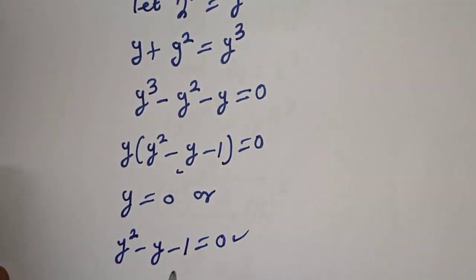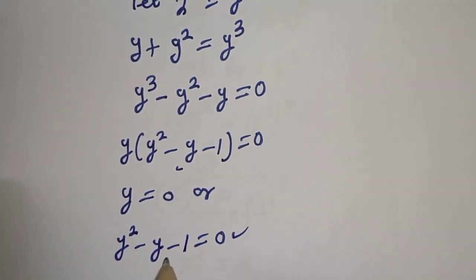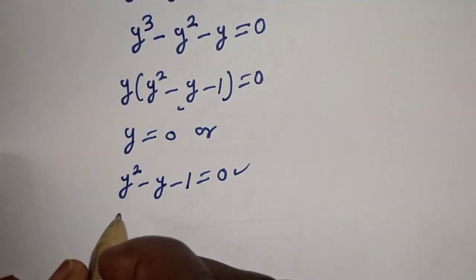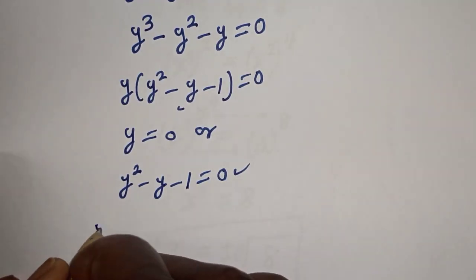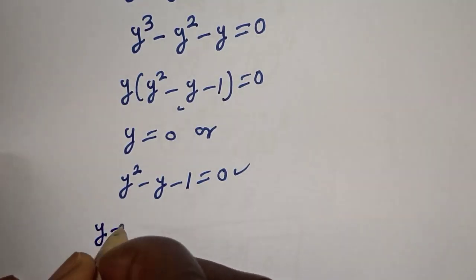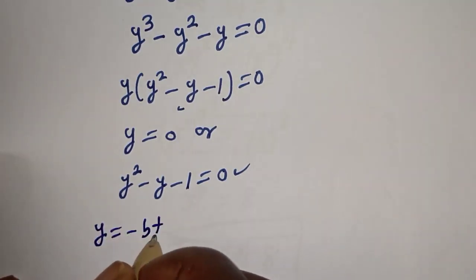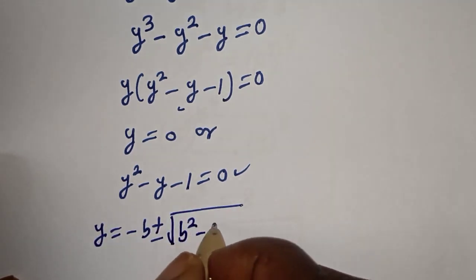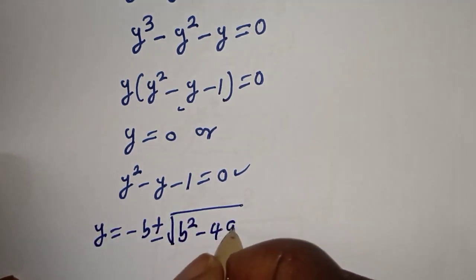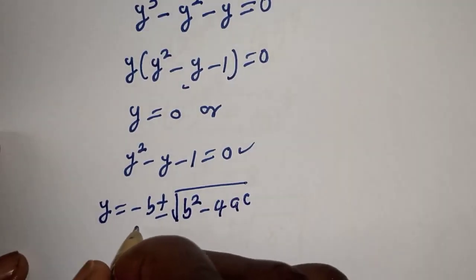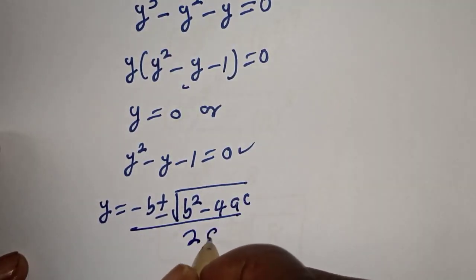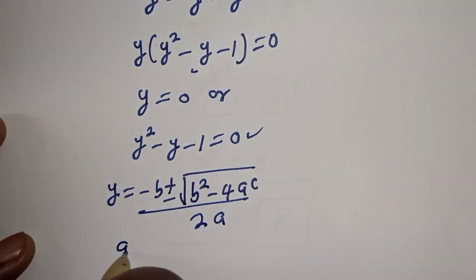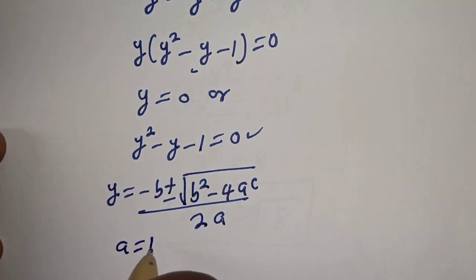This is a quadratic equation, which can be solved using the quadratic formula. The quadratic general formula gives us: y equals negative b plus or minus square root of b squared minus 4ac, all over 2a.